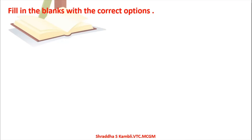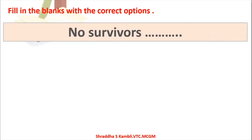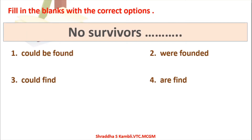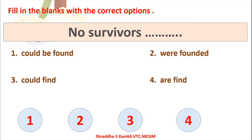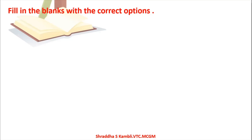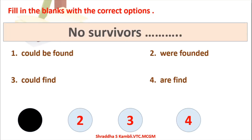Next: 'No survivors ___.' Options: (1) could be found, (2) were founded, (3) could find, (4) are find. Checking grammar and tense, the answer is: 'No survivors could be found.'